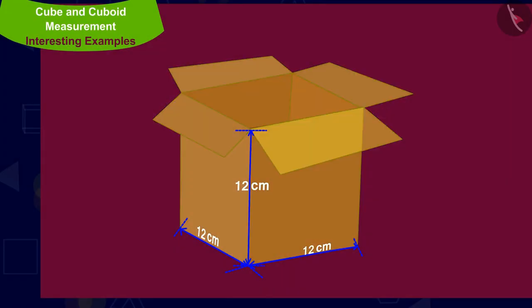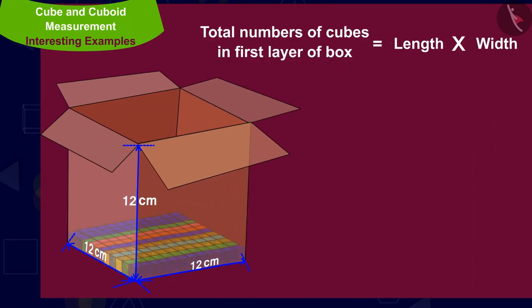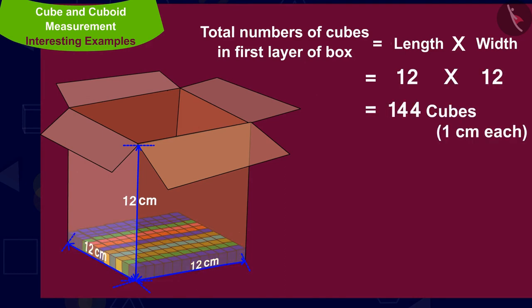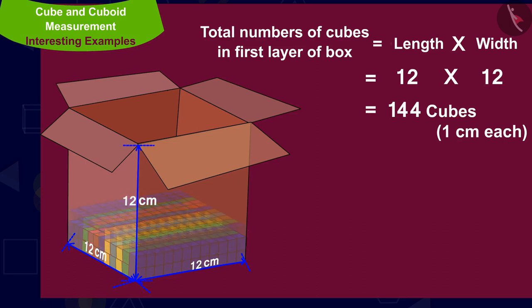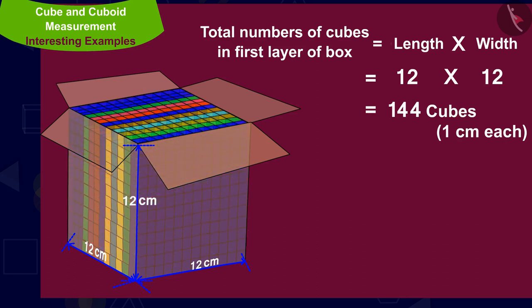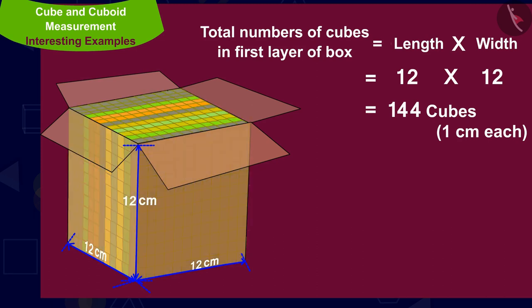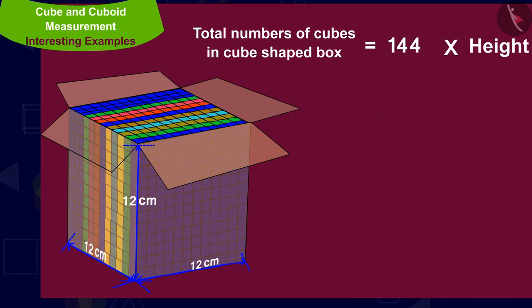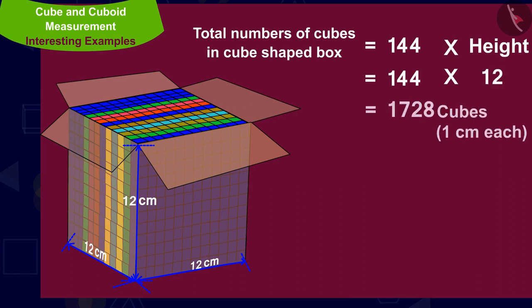This box is cube shaped, so its first layer will contain 12 times 12, which is 144 cubes of dimension 1 centimeter each. The height of this box is also 12 centimeters, so this box will have 12 such layers of cubes of dimension 1 centimeter each. Therefore, this box will contain 144 times 12, which is 1728 cubes of dimension 1 centimeter each.